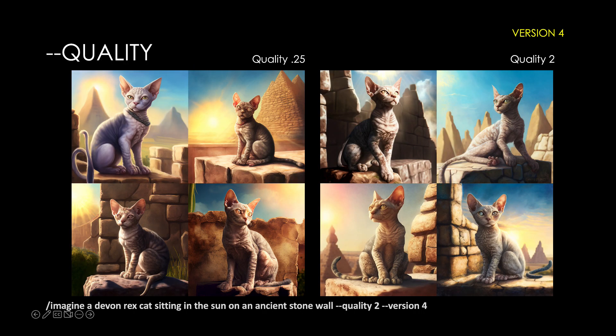In version 4, the quality difference between settings 0.25 and 2 isn't that great. The fur of the cat is detailed, the ears — which this breed is known for being quite large — are detailed in both settings, and the stone wall has great detailing with a great background. For characters and settings, the quality difference in version 4 isn't that significant in my mind.